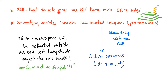Cells that secrete more will have more endoplasmic reticulum and more Golgi — form follows function. The secretory vesicles contain inactivated enzymes, also known as proenzymes. When they exit the cell, they get activated into their active counterparts, ready to do their job.